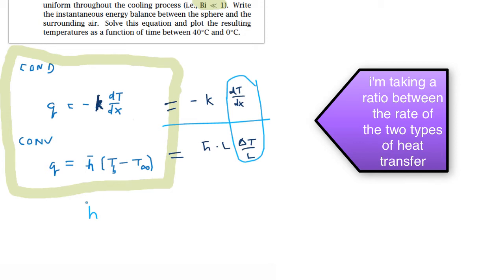I'm going to write it this way since it's convenient. You'll see why it's convenient: h bar times L divided by k of the body.